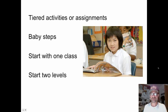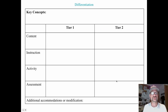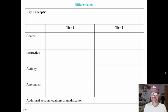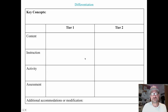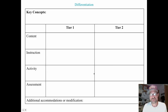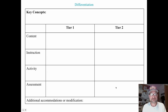Tiered activities and assignments are a good idea and one of many ways to differentiate. Take baby steps — start with one class and maybe two levels. Here is a graphic organizer form that can help you differentiate a story, lesson, or unit. It includes spaces for key concepts, then tier one and tier two for differentiating content, instruction, activity, and assessment. When we normally think of tiered instruction, content and instruction remain the same — the only places we differentiate are the activity and assessment.